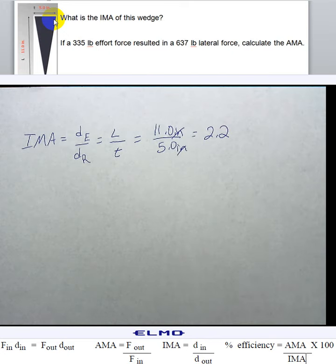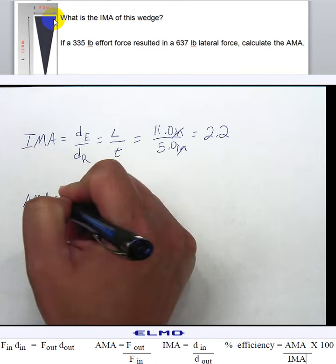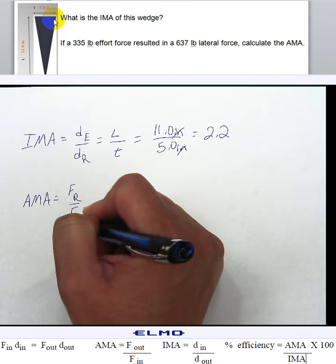Alright, so the next part of the problem says if a 335 pound effort force resulted in a 637 pound lateral force, calculate the AMA. So, AMA equals force of our resistance over force of our effort.